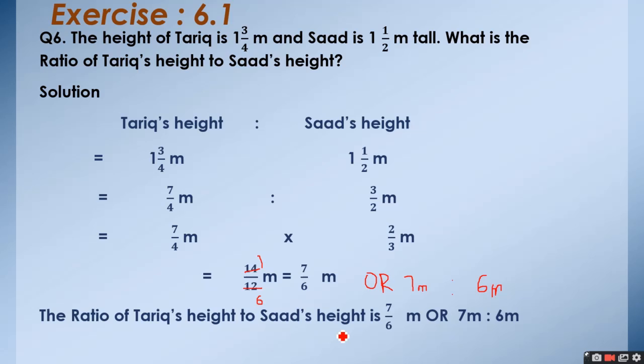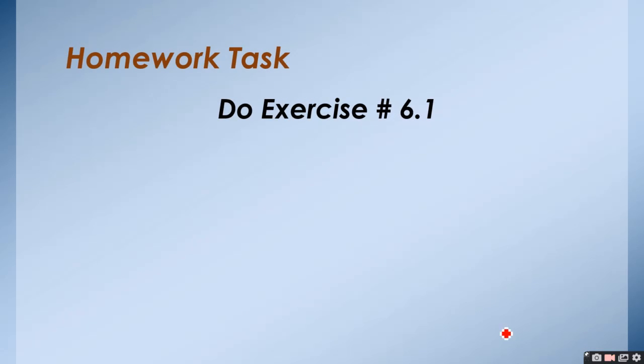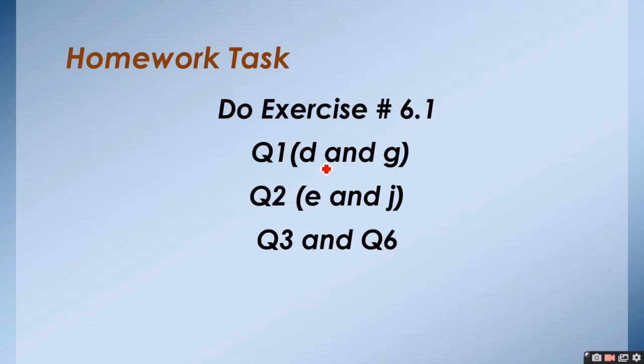The ratio of Tarek's height to Saad's height is 7 upon 6 meter or 7 meter ratio 6 meter. So, I hope you all have understood. Homework task is you have to do exercise 6.1, question 1 part D and G, question 2 part E and J, and question number 3 and question number 6.